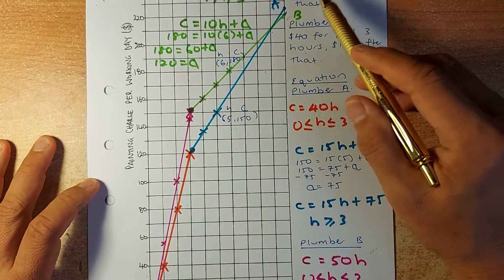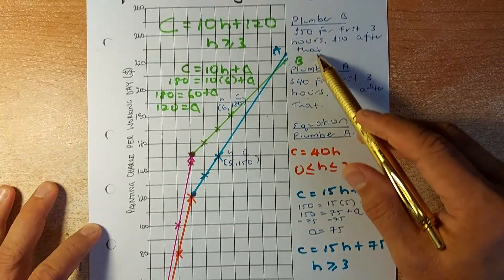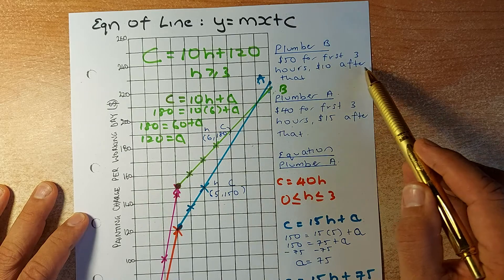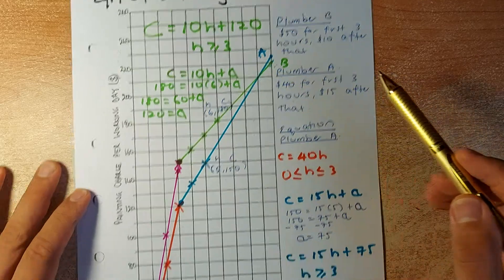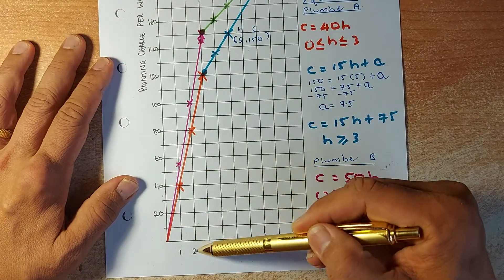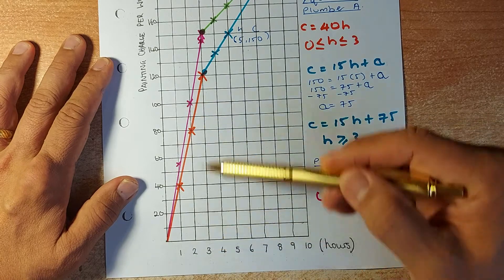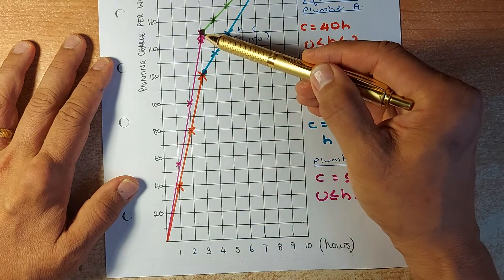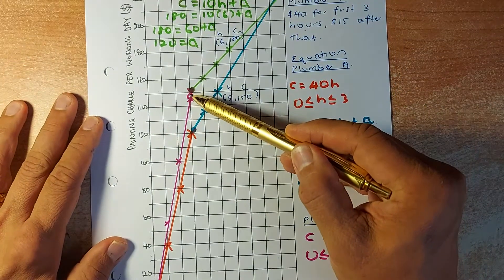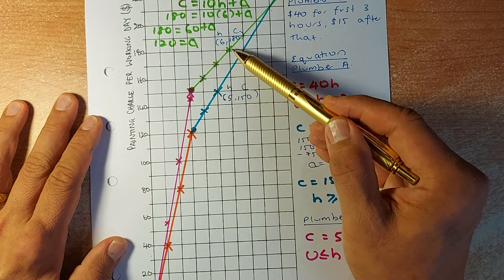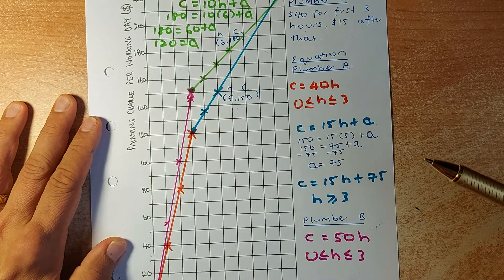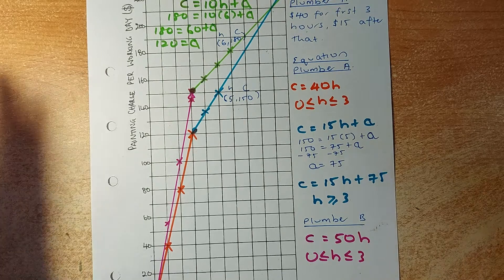Plumber B is slightly different — $50 for the first three hours and $10 after that. So the first hour is $50, the second hour is $100, and the third hour is $150. After that, it increases by $10 per hour, giving $160, $170, and $180 after the sixth hour. That's how you draw the graph.